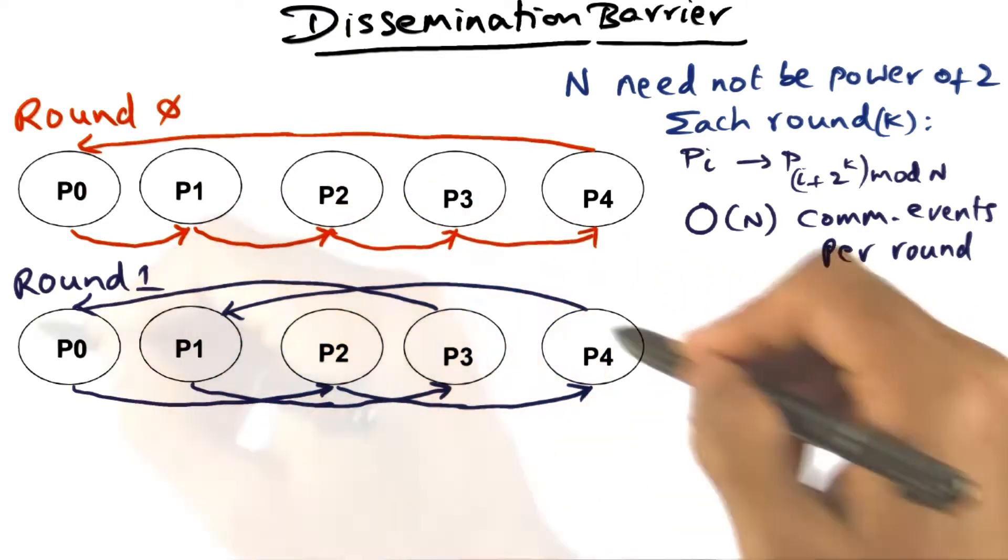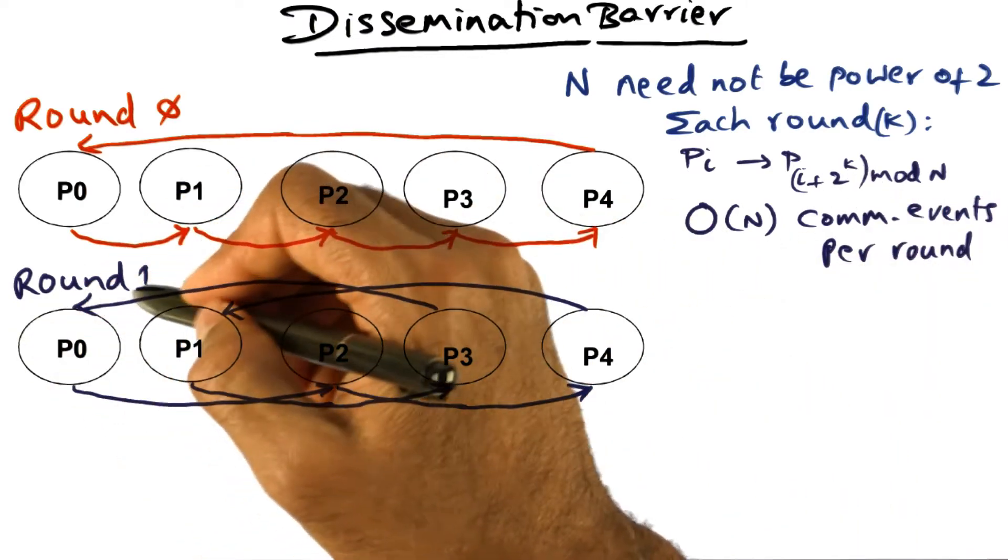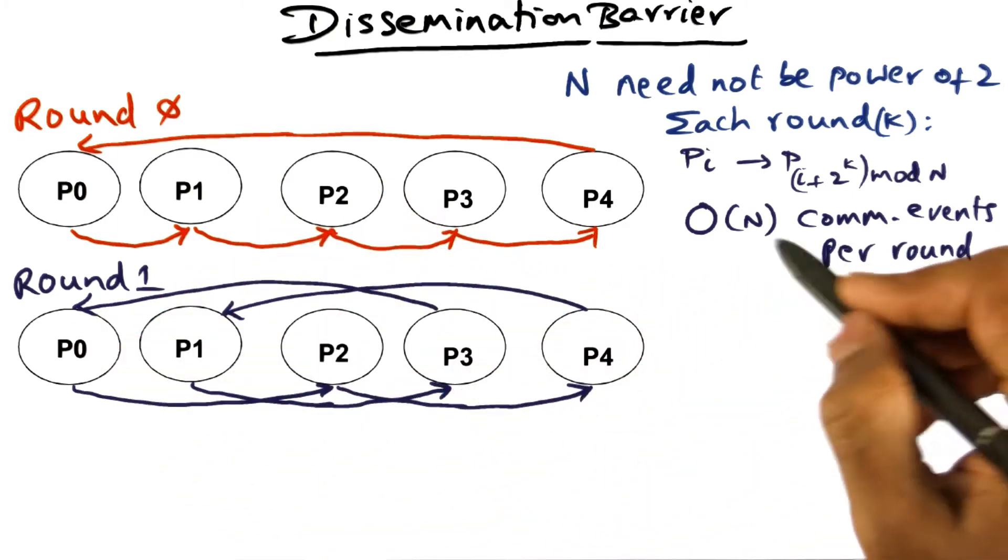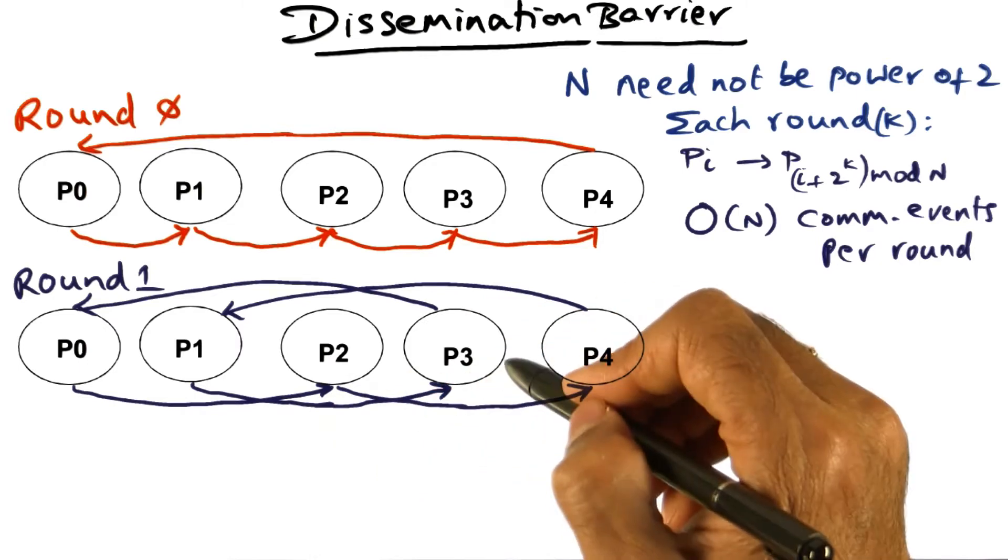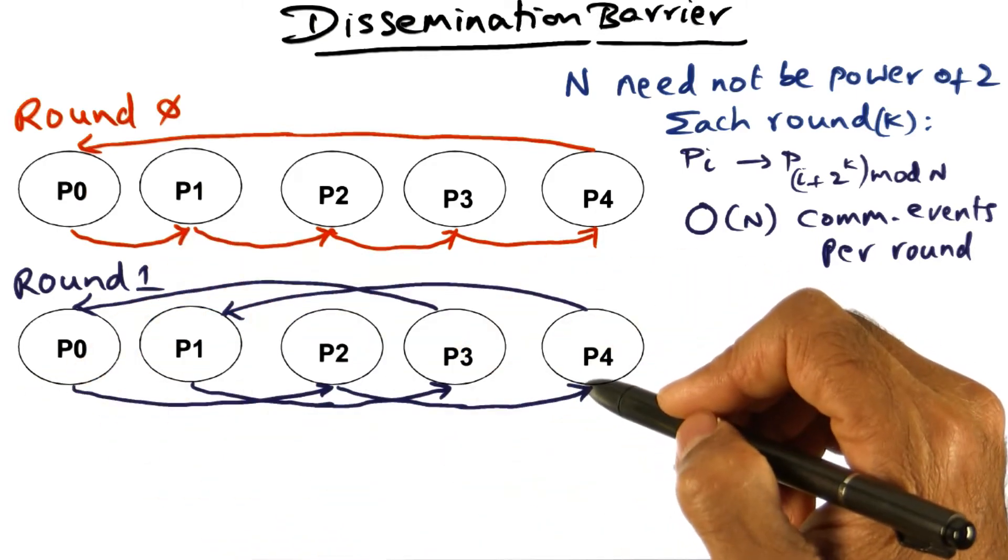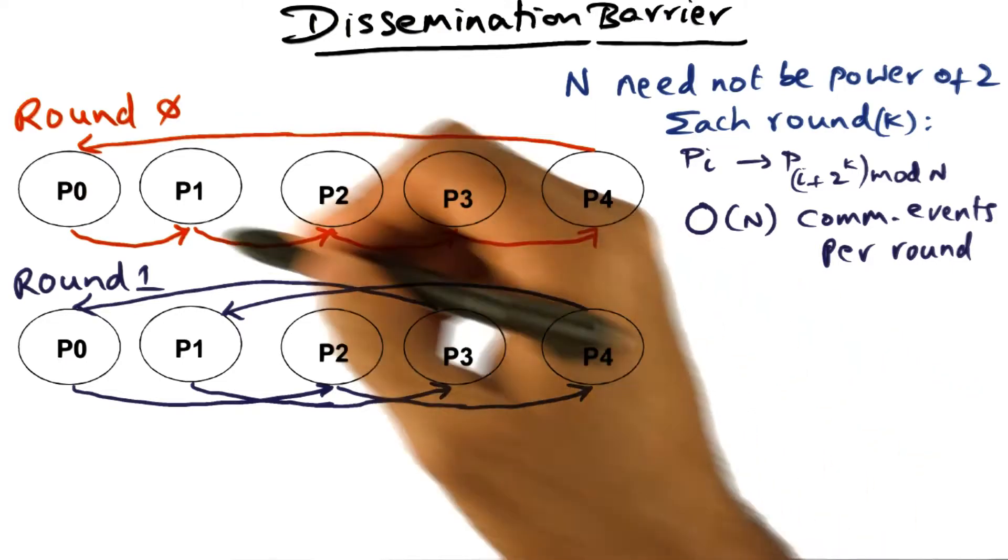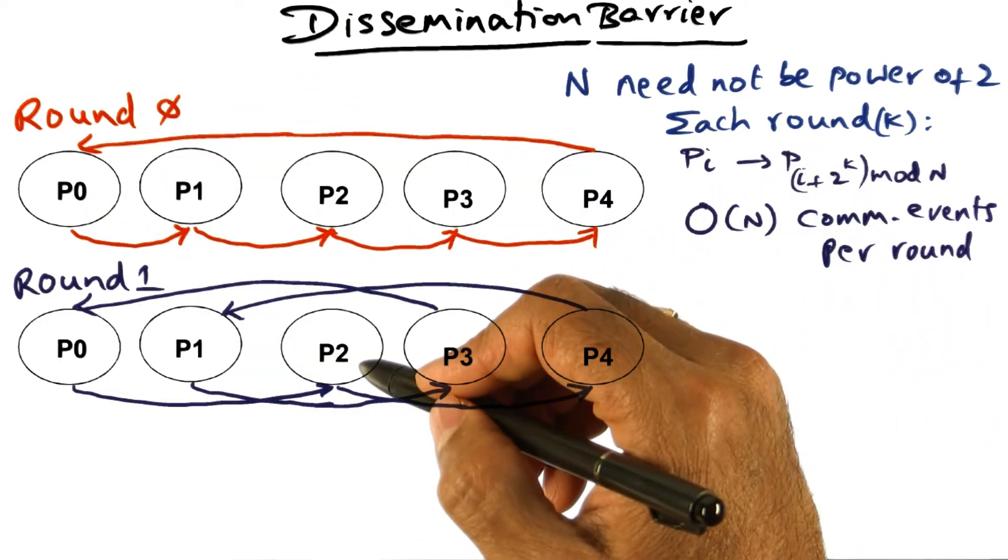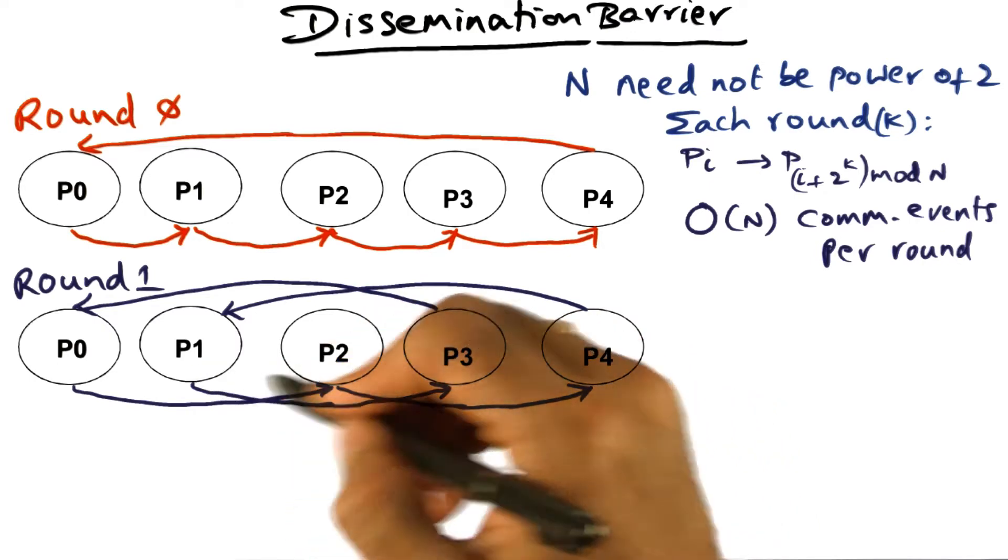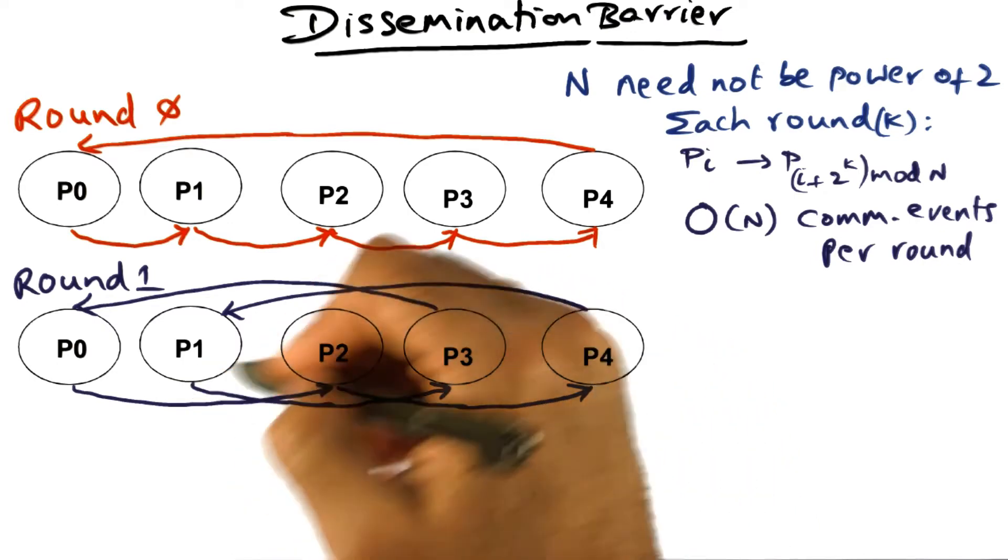So that's round 1 of communication with k equal to 1, where once again, order of n messages are being exchanged among these processors to indicate that this round is complete. Just as I said about round 0, every processor will know that this round is complete when it receives a message from its ordained neighbor.